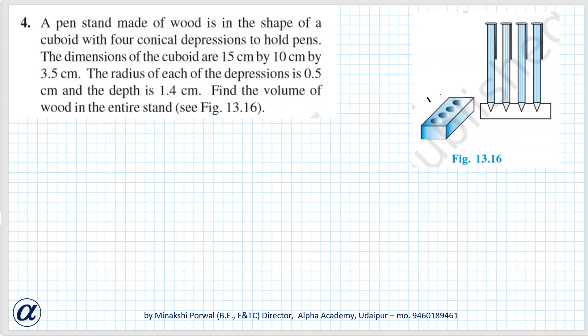Basically, we have to find the volume of this figure which is made up of a cuboid, and in this four conical depressions are there. That means volume of cuboid minus volume of these four cones.